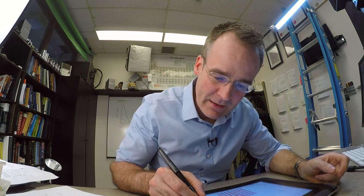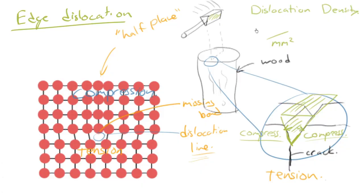We can have a range anywhere from about 10 to the 4 dislocations per square millimeter up to, on the high end, 10 to the 10 dislocations per square millimeter. On the high end, that would be something that's heavily deformed, really lots of plastic deformation.